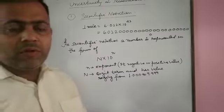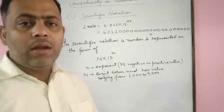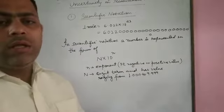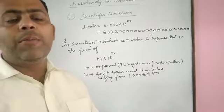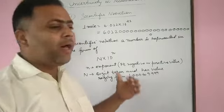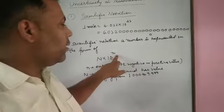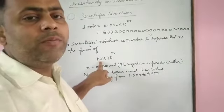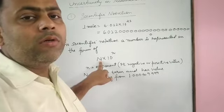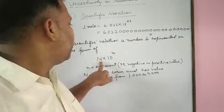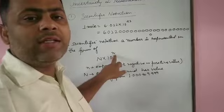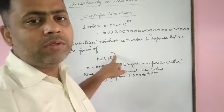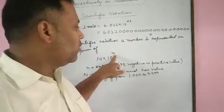In scientific notation, a number is represented in the form of M into 10 to the power of n, where M is the digit term and its value varies from 1.000 to 9.999, and small n is the exponent term which can have a negative or positive value.